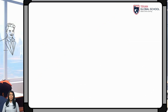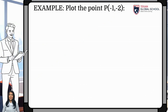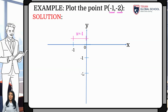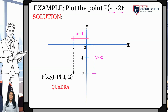Now we will graph the point P with coordinates (-1, -2). We first draw the coordinate axes. The abscissa is 1 unit; however, since it is negative, it is located to the left. The ordinate is 2 units down, since it is negative. With these two distances, we can plot the point on the plane. We can see that the point is located in quadrant 3, since the abscissa is negative and the ordinate is also negative.